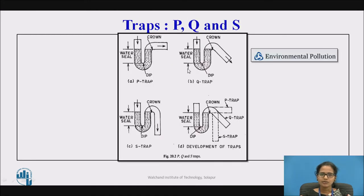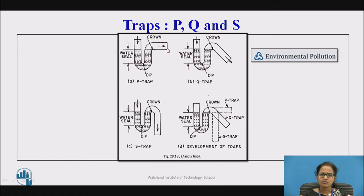The P trap is mostly installed under most house sinks. It is fitted with a 90-degree outlet. This is the depth of the water seal. It is the most common trap used in house sinks.